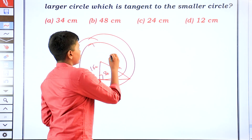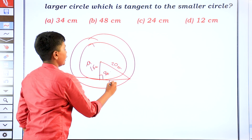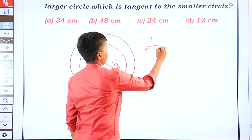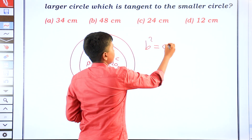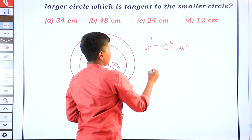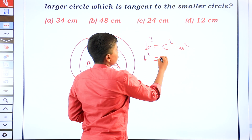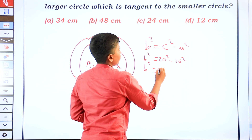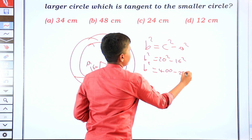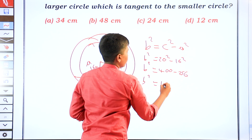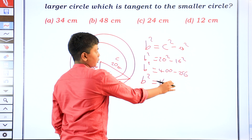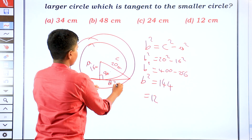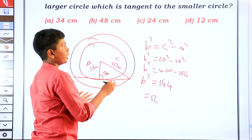Using the right triangle with hypotenuse 20 cm and one leg 16 cm: the other leg b equals the square root of 20 squared minus 16 squared, which is root of 400 minus 256, equals root 144, equals 12. Since the chord is bisected by the perpendicular, the total chord length is 12 plus 12 equals 24 cm.